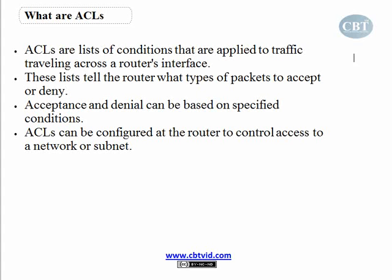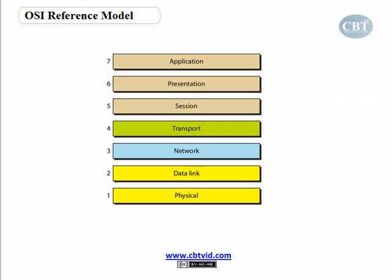How can a router control this access? When I say traffic, the router looks at the source IP address and destination IP address of a packet, and then based on that it decides. Of course there are a lot of other things routers will look at, like source port, destination port, and layer 5 of the OSI reference model — meaning checking if the connection is established or not. But for now I'm going to talk about basic or standard access control lists, which work based on layer 3 of the OSI reference model.